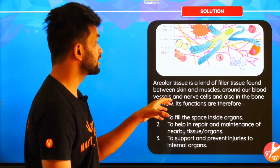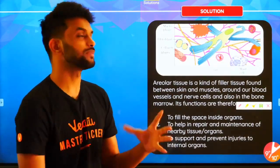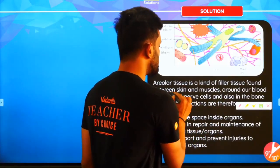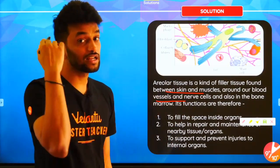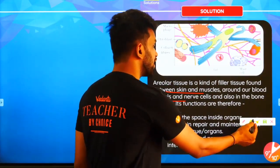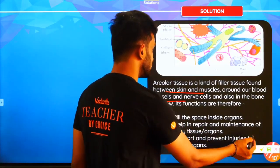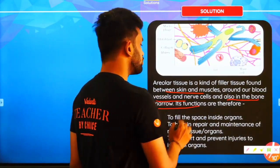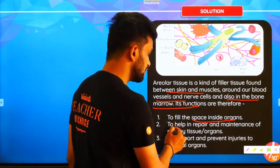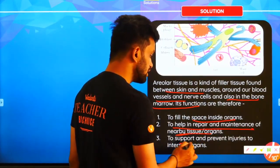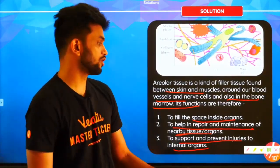It's kind of a filler tissue — like cotton is filled, it fills spaces. It is present between the skin and the muscles, around our blood vessels, and also in our nerves — it is present in nerve cells as well, essentially everywhere, in between every tissue. It is also functional in the bone marrow. It helps fill spaces, helps in repair and maintenance, and also helps in preventing injuries and absorbing shock to protect internal organs.